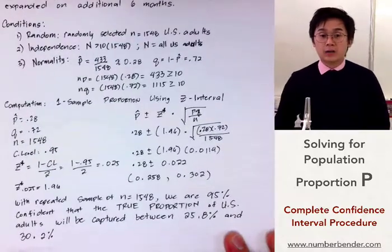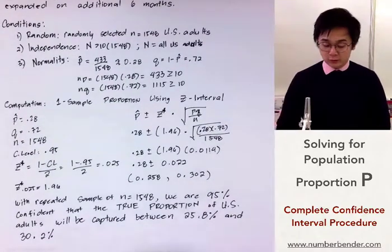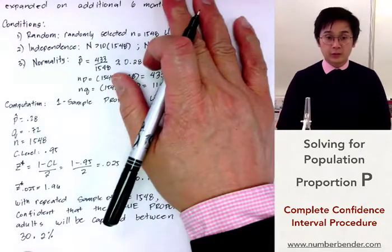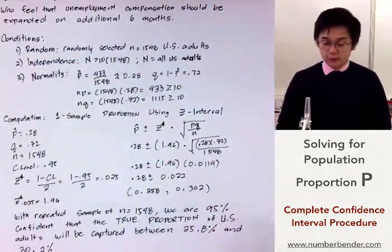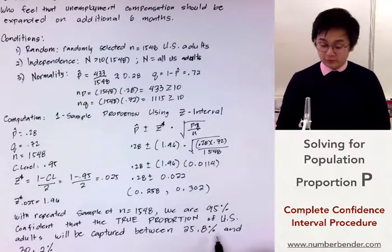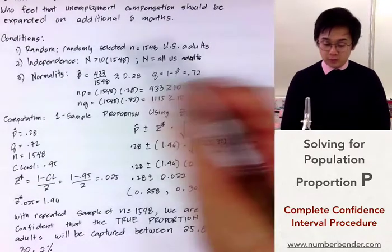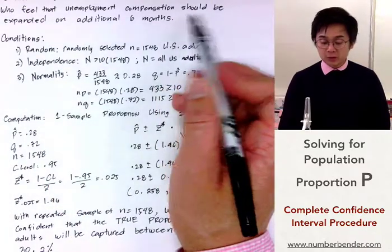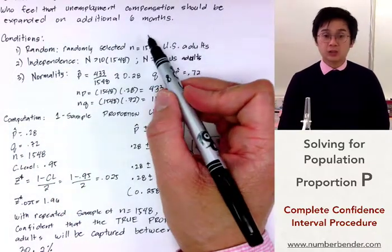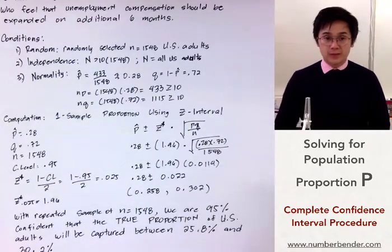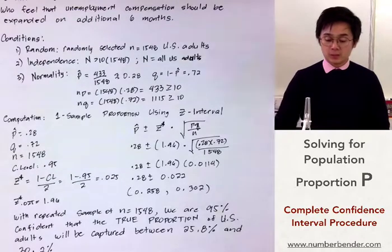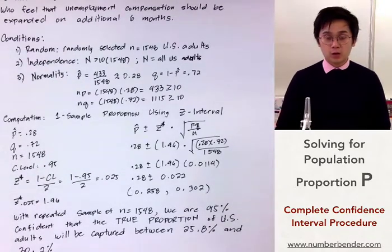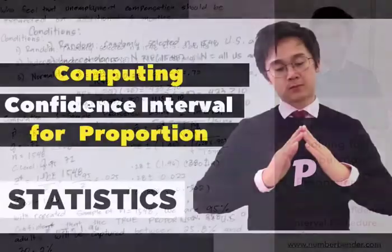This is now our confidence interval interpretation. Using the parameter of interest, we don't need to write out that we're referring to the U.S. adults who feel that unemployment compensation should be expanded an additional six months, since we have established it already. This is how we construct our complete computation or complete work for our confidence interval for population proportion.